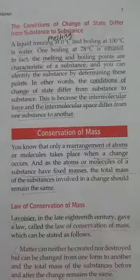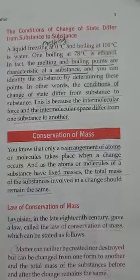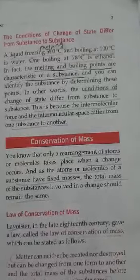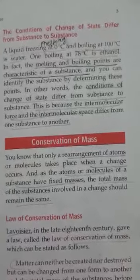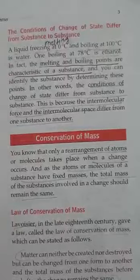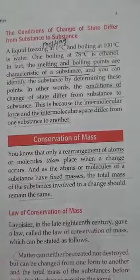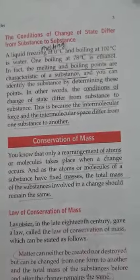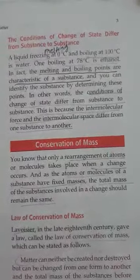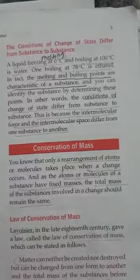We know that water freezes or melts at 0 degree Celsius and boils at 100 degree Celsius, and that the boiling point of ethanol is 78 degree Celsius. So the melting point and boiling point are characteristics of a substance, and by determining these we can identify the substance.